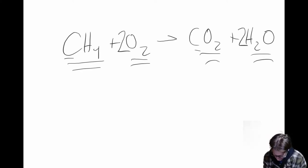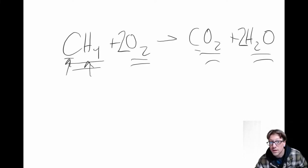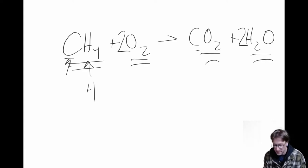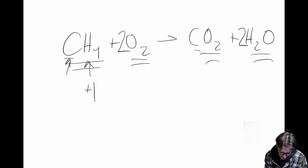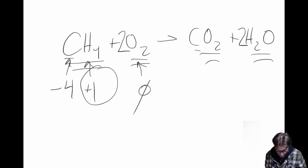Now let's assign oxidation numbers. We're going to assign numbers to each atom, starting with carbon and hydrogen in CH₄. Hydrogen is mostly always a plus one — since there are four of them, carbon has to be a negative four, which makes sense since carbon can be plus or minus four. Oxygen in its standard state gets a value of zero.